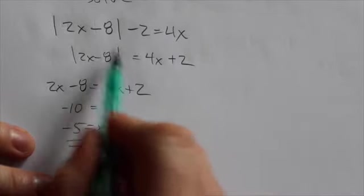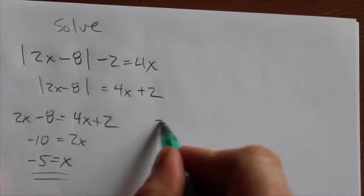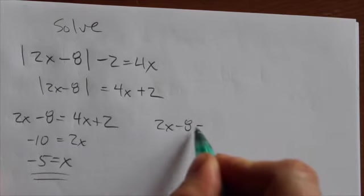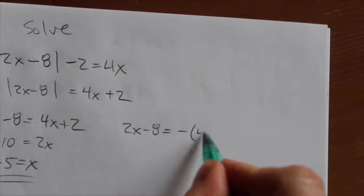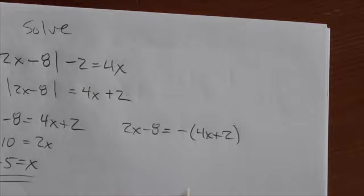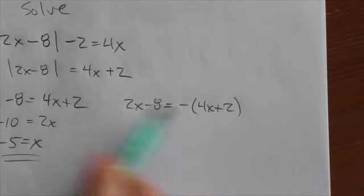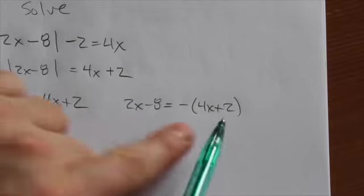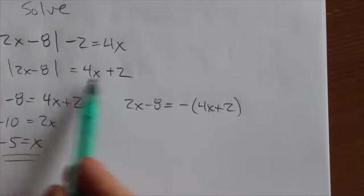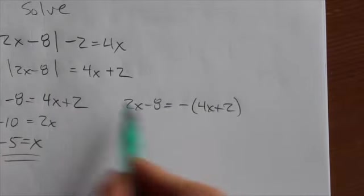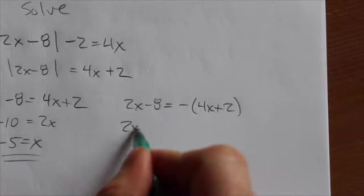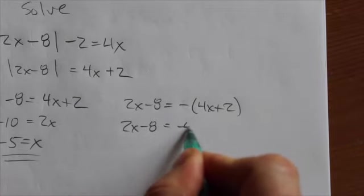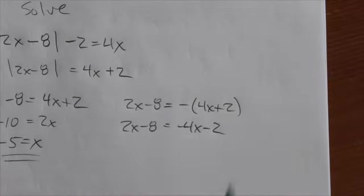Now, however, it might also be the case that this 2x minus 8 is equal to the negative of what's on the other side there. Now, if it was, the absolute values here would drop the negative, and then all we would be left with is positive 4x plus 2 equals 4x plus 2, if that was what it was equal to. Now, let's just check out what happens if that's the case. That's negative 4x minus 2 if we put the negative through.